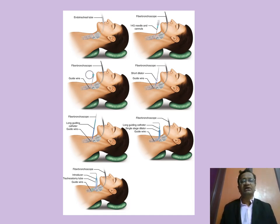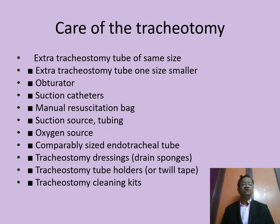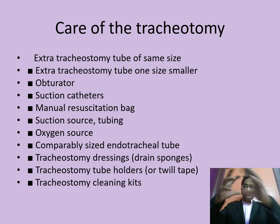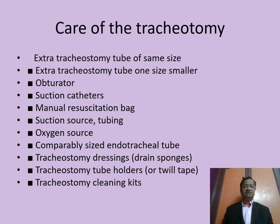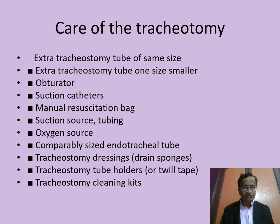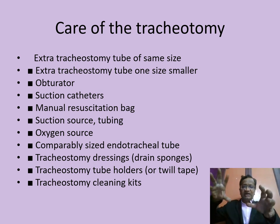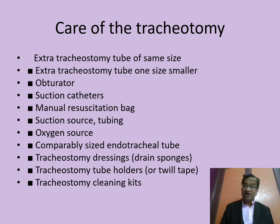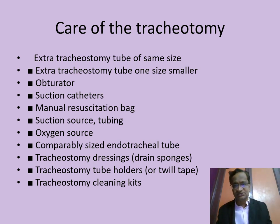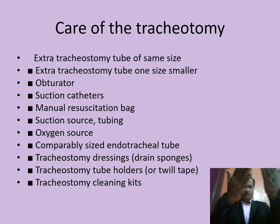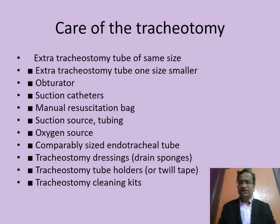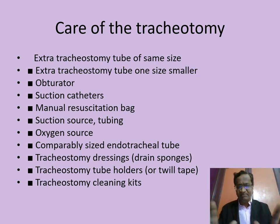After connecting to the ventilator, care for the tracheostomy requires: an extra tracheostomy tube one size smaller, the obturator, suction catheters, a manual ambu bag, an oxygen source, an emergency endotracheal tube, dressings, tube holders, and tracheostomy cleaning kits. These are the basic essential items.